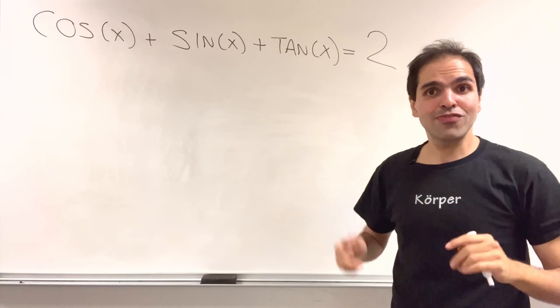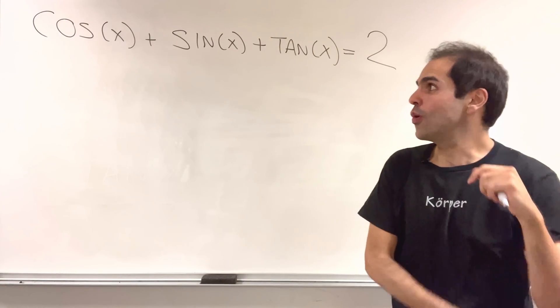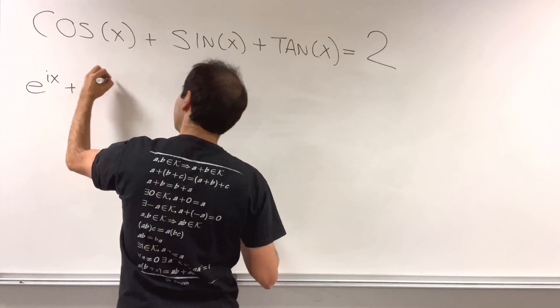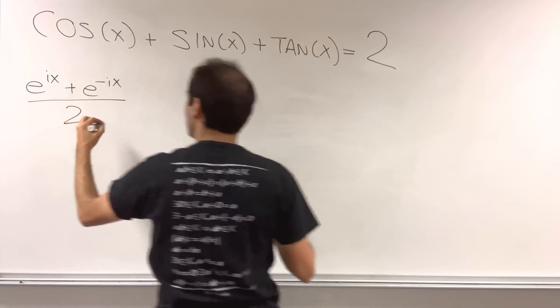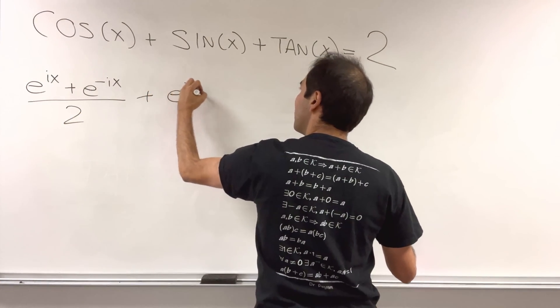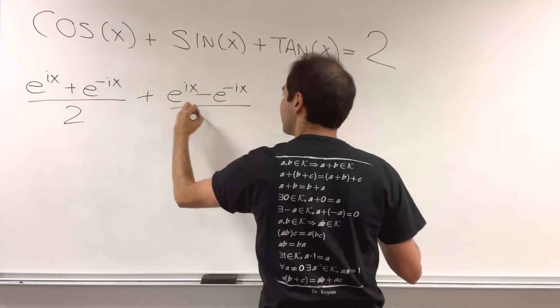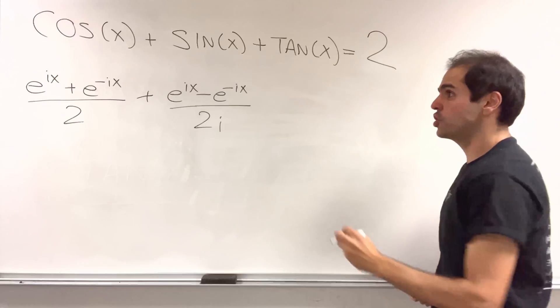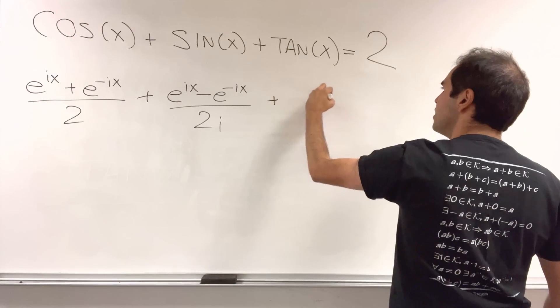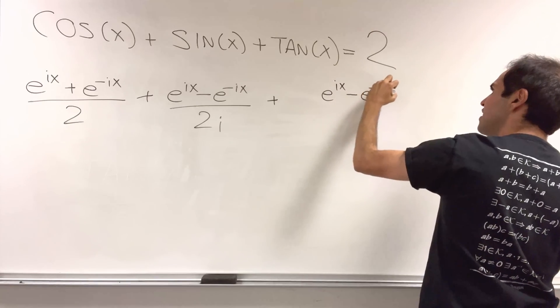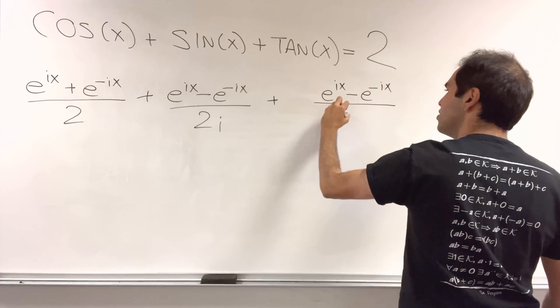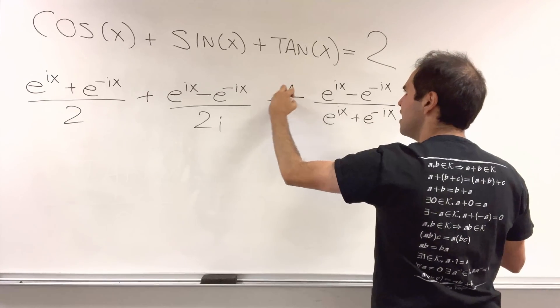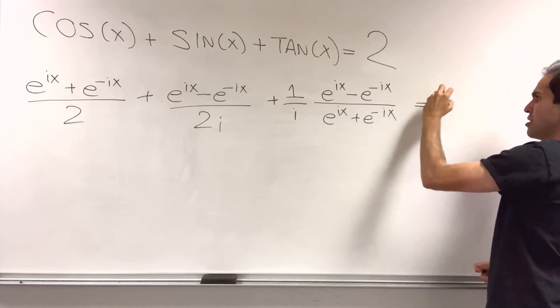And in order to do this, let's first dive into the complex world. So cosine is just e to the ix plus e to the minus ix over two. Sine is e to the ix minus e to the minus ix over two i. And lastly, tangent is just the ratio of the two. So it becomes e to the ix minus e to the minus ix over e to the ix plus e to the minus ix, sine over cosine, and divided by i equals two.